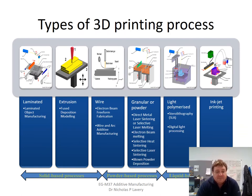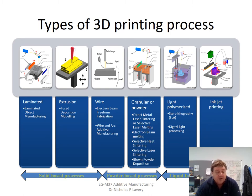Using a material-based classification of the different processes, we have a range: laminated, extrusion, wire-based systems, granular or powder-based systems, and light polymerized and inkjet printing. Some of these, by the nature of the process, are restricted more for polymer-based systems, like inkjet printing and light polymerized. One of the original was the stereolithographic system, or SLA system. What we're going to focus a lot on in this course are the powder-based processes.